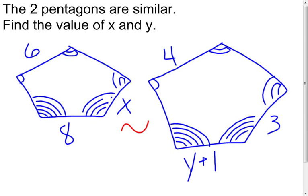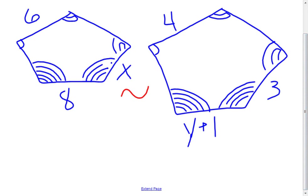Now, in this one, notice, it tells us that the two pentagons are similar. We know they are. We don't have to check them. We know they are. We want to find the value of x and y. Well, if they're really similar, that means that the corresponding angles are congruent, which we can see, and the corresponding sides are proportional.